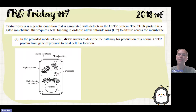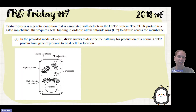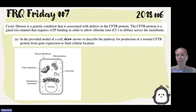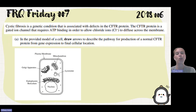They give us this background — they talk about cystic fibrosis and how it's a genetic condition associated with defects in the CFTR protein. The CFTR protein is a gated ion channel that requires ATP binding in order to allow chloride ions to diffuse across the membrane.